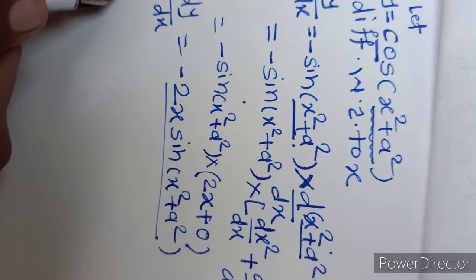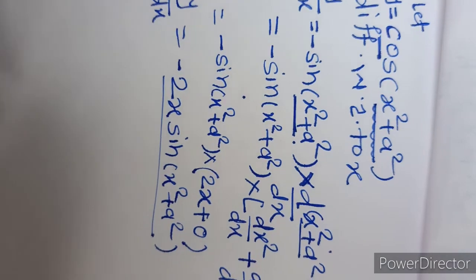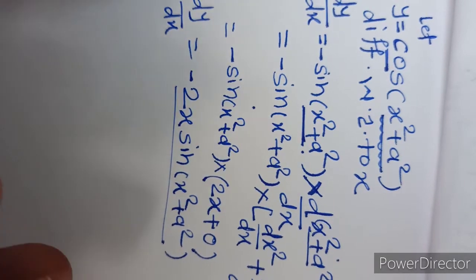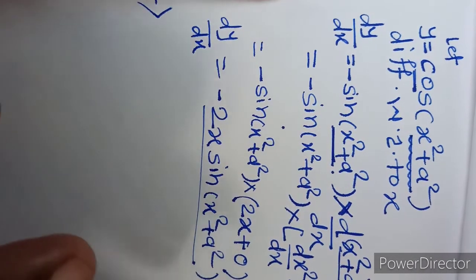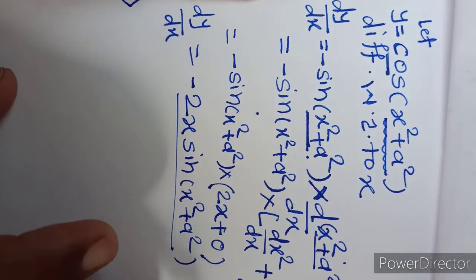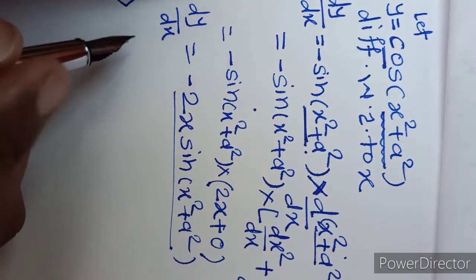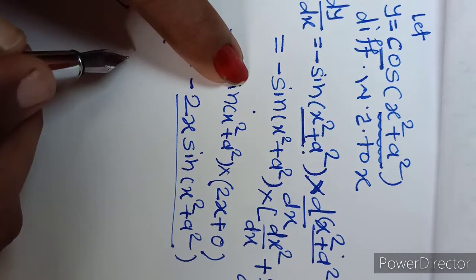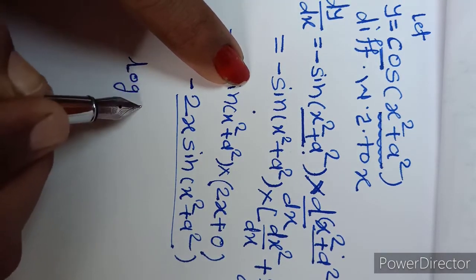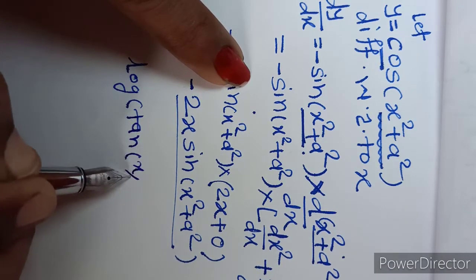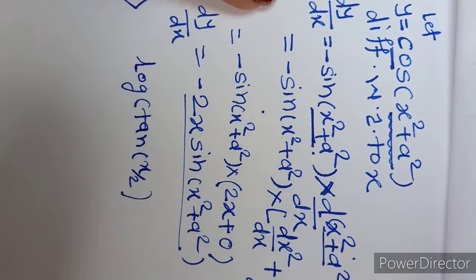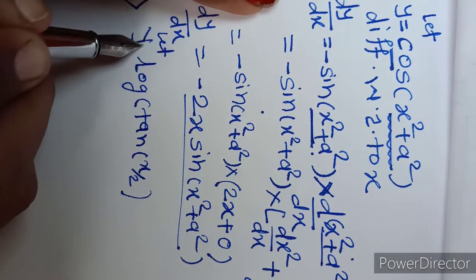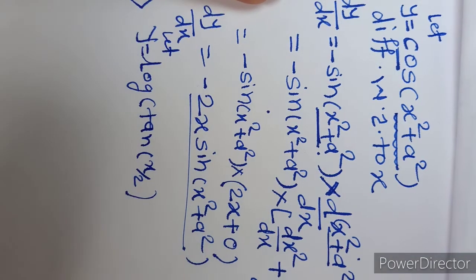So we will discuss one more example. If you need more examples, I will attach some small examples in the description. The second example is a logarithmic function: y = log(tan(x/2)). We denote the given function as y, and differentiate with respect to x.